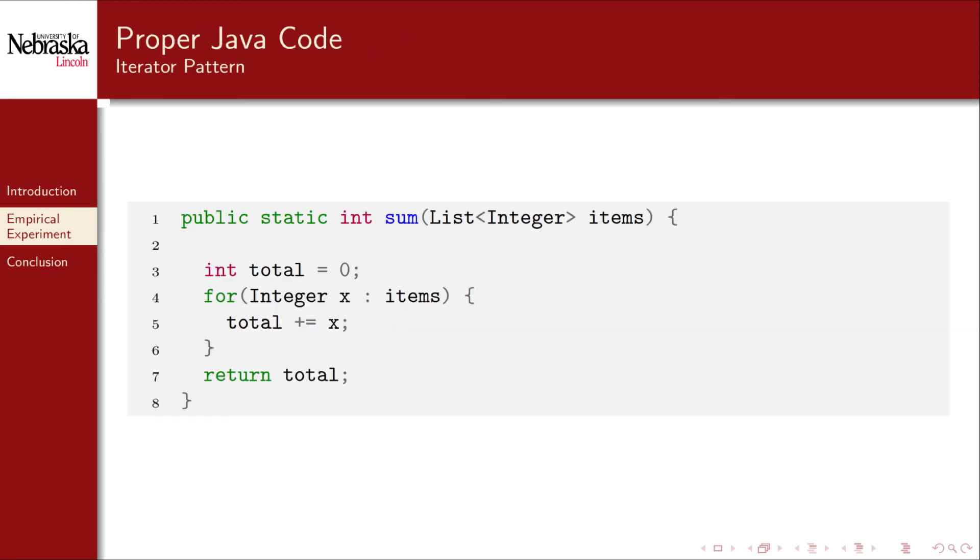In case you're wondering what the proper Java code looked like, I've fixed our method from before. Instead of using the .get method, which can be inefficient depending on the list implementation, I'm using an enhanced for loop using the list's iterator. This code will now be performant regardless of the list's underlying implementation.